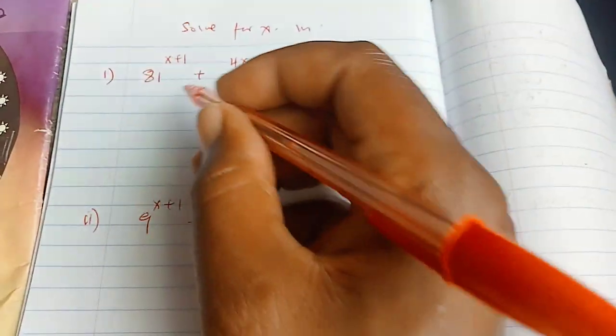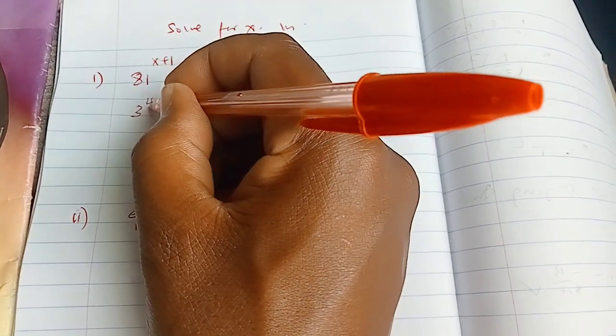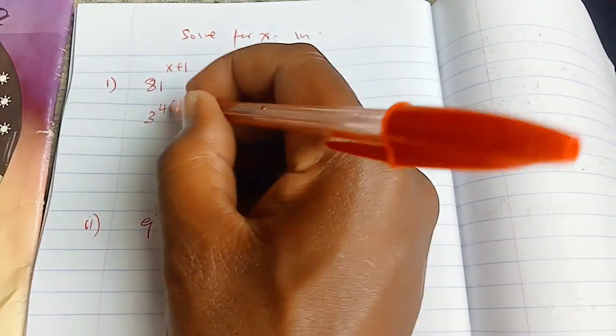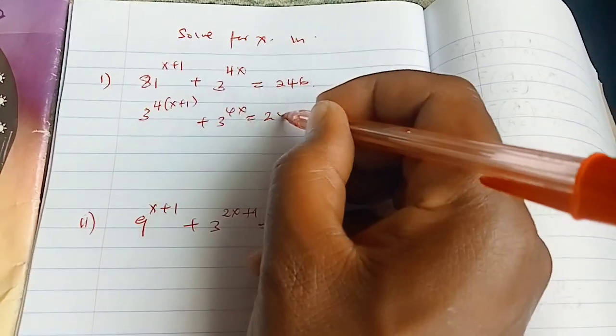So we are going first of all to write 81 to its simplest base which is 3 to the power of 4 and then using the laws of indices to simplify that and this is what we are going to have.